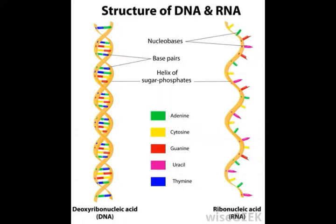Very similar in composition and function to its counterpart DNA, RNA differs in three unique ways. The first is that it is single-stranded, whereas DNA is a double helix. Secondly, RNA contains ribose rather than deoxyribose, and thirdly, adenine's complementary base in RNA is uracil rather than thymine.